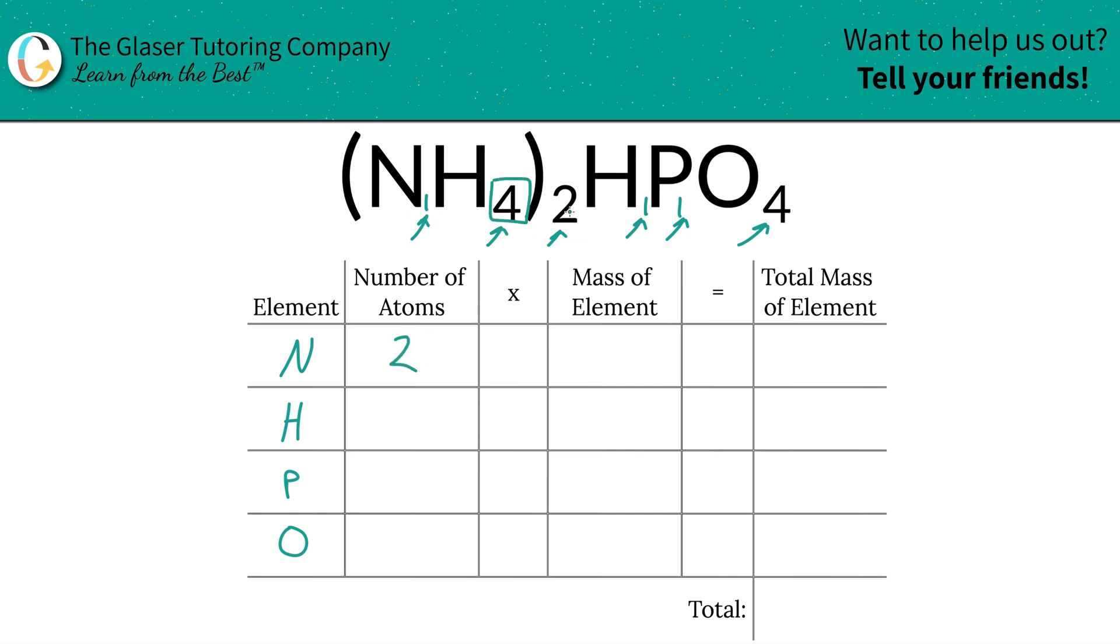Hydrogen now is the same thing. You've got the inner subscript of a four, outer subscript of a two, so there's eight hydrogens in total here, but don't forget, uh-oh, there's also another hydrogen over here, and there's one, so that means you have a total of nine.